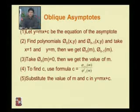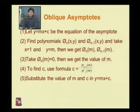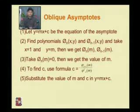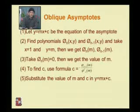To find the oblique asymptotes, we have to follow five steps. Now we will discuss about some standard graphs, starting with the strophoid.